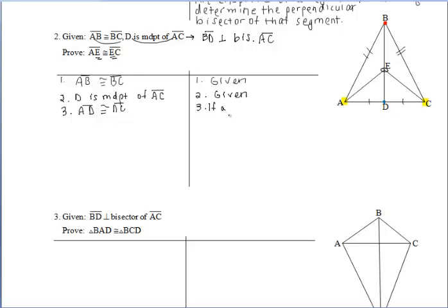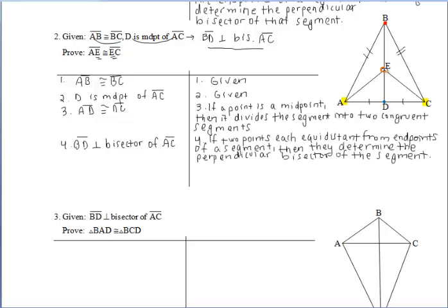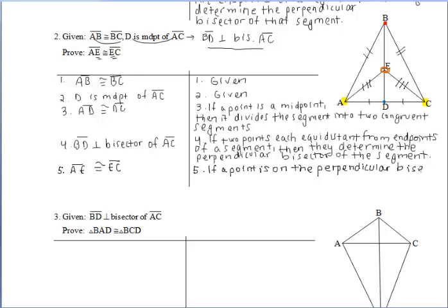Since D is the midpoint, segments AD and DC are congruent because a midpoint divides a segment into two congruent segments. Since points B and D are each equidistant from the yellow endpoints of segment AC, segment BD must be the perpendicular bisector of AC — if two points are each equidistant from the endpoints of a segment, they determine the perpendicular bisector. Since point E lies on the perpendicular bisector BD, it is equidistant from A and C, so segments AE and EC are congruent, because if a point is on the perpendicular bisector of a segment, it is equidistant from the endpoints.